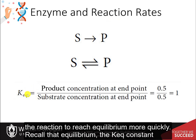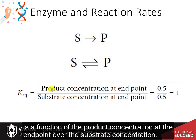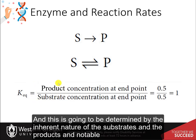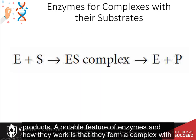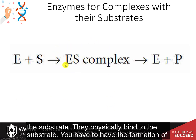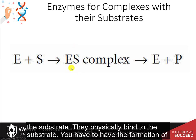Recall that the equilibrium constant K is a function of the product concentration at the endpoint over the substrate concentration, and this is determined by the inherent nature of the substrates and the products. A notable feature of enzymes is that they form a complex with the substrate — they physically bind to it. You have to have the formation of the ES complex to produce the product, and then the enzyme will release that product.